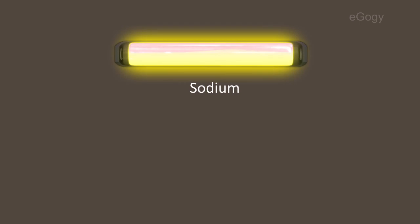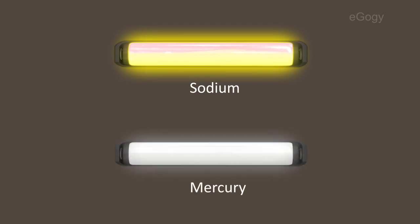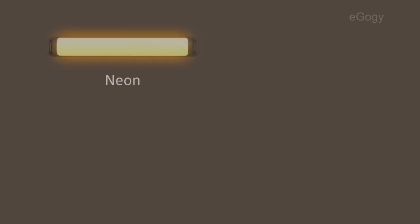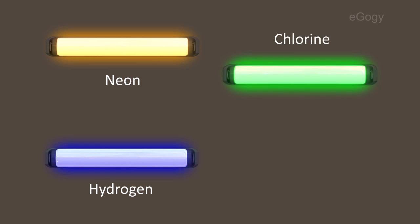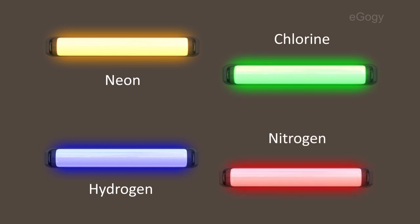The color of the light from the lamp depends upon the nature of gas filled in the tube. Sodium vapor lamp produces yellow light, whereas mercury vapor lamp gives white light. Neon lamp emits orange-red light. Hydrogen produces blue light, chlorine produces green light, and nitrogen produces red light.